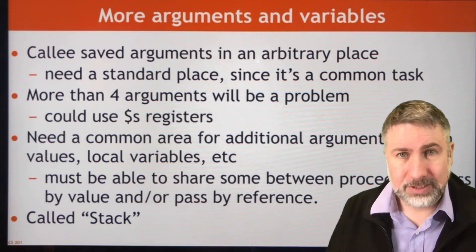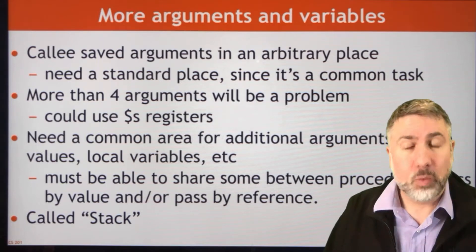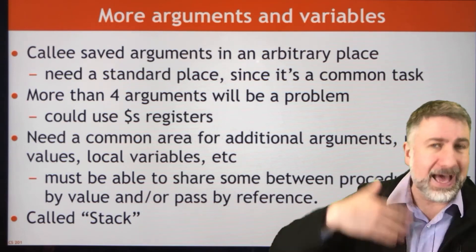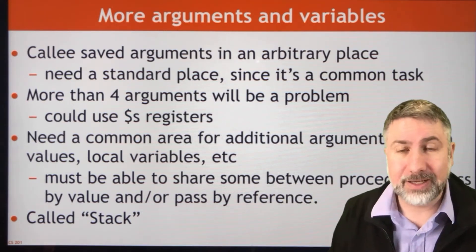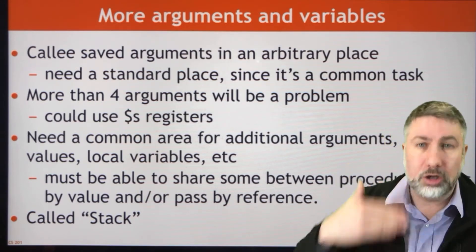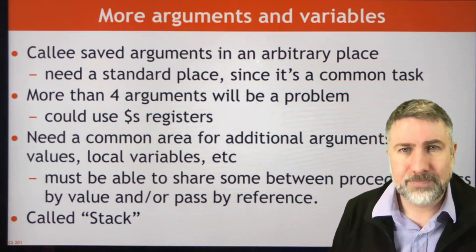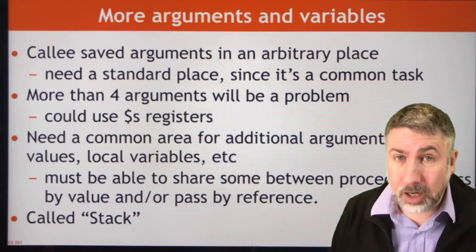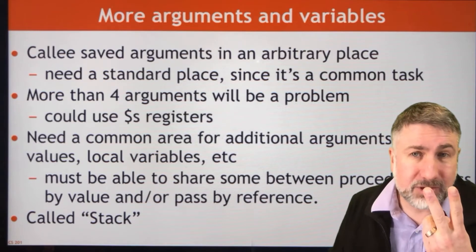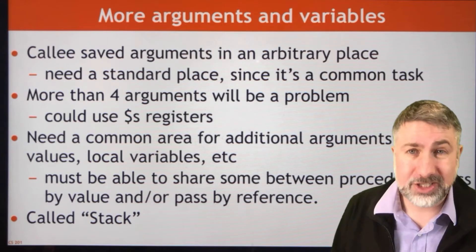What we'd like to do is to be able to allocate this stuff in real time at runtime when we run the program, so that if we call a procedure more than once, we can just keep adding copies of these things to wherever we're going to store this information. For example, if we were doing any recursion, we're going to call the same procedure over and over again — that's not going to work with any of these single-shot solutions. So we need a general solution that's going to be a common area for additional arguments, local variables, and return addresses. We're going to call this the stack.